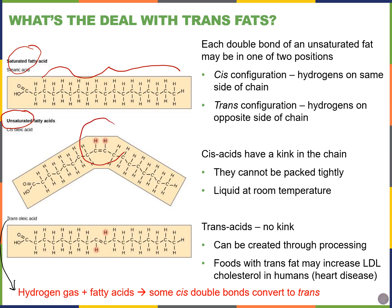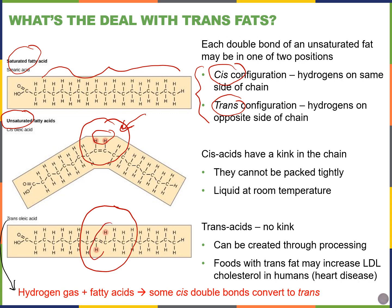There are two types of unsaturated fats: a cis configuration and a trans configuration. These terms come from geometric isomers — molecules with a different arrangement of atoms around the double bond. In cis, the hydrogen atoms are on the same side of the double bond; in trans, the hydrogen atoms are on opposite sides. Why does that matter in terms of unsaturated fats?